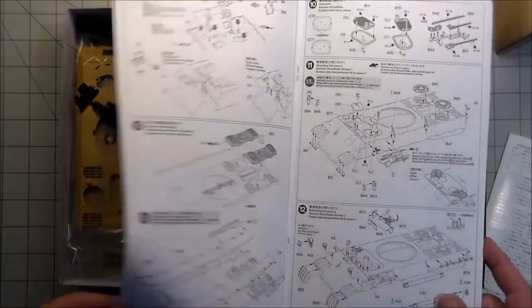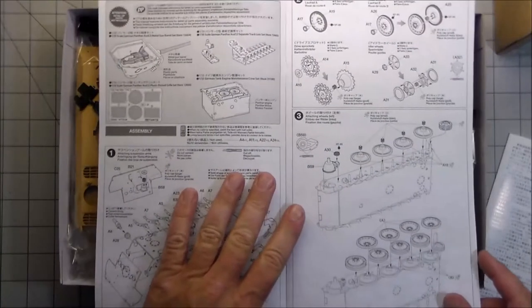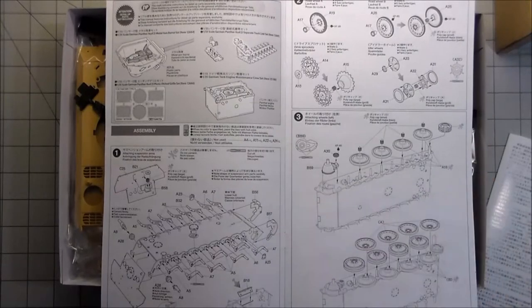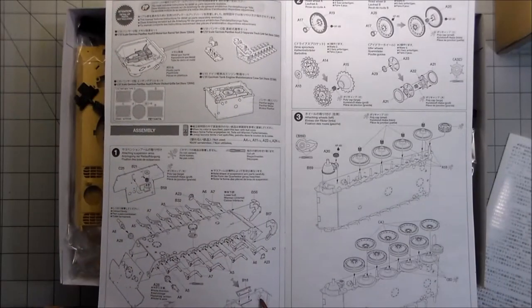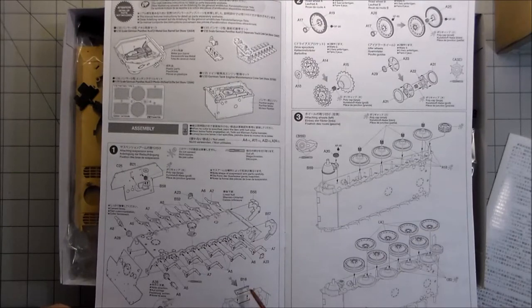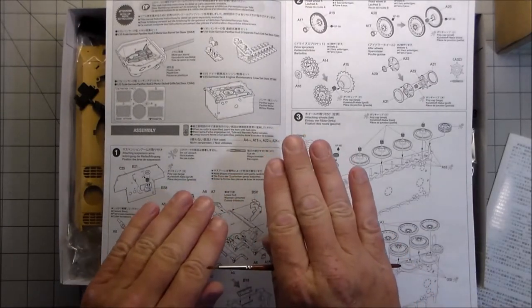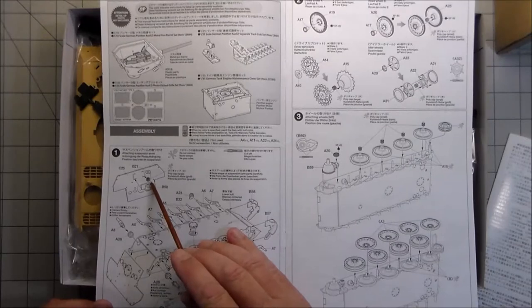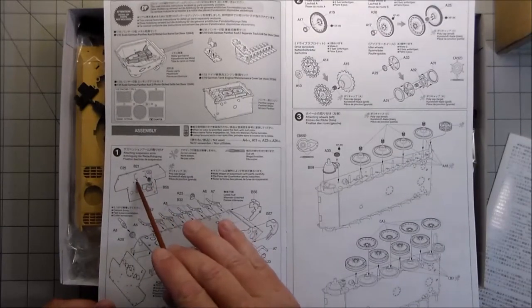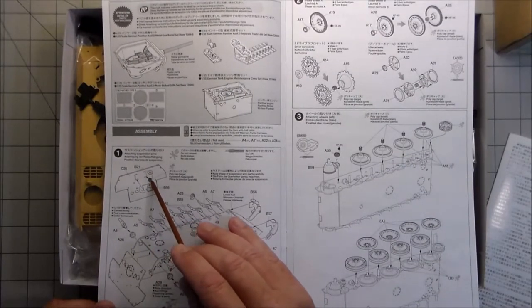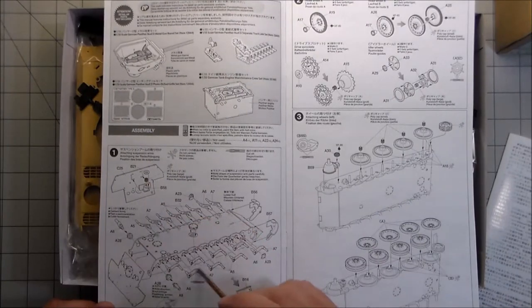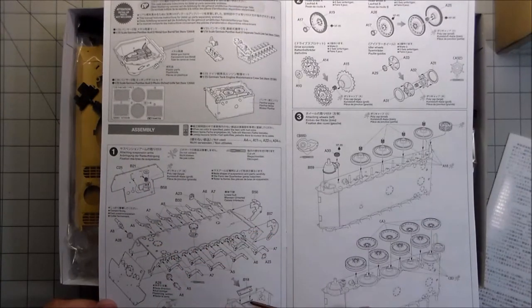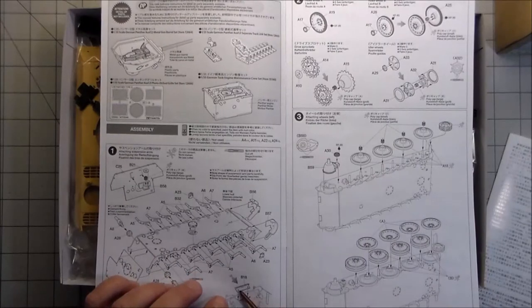One thing that I have noticed just now that I really like about the way Tamiya is doing their kits is the way their upper hulls fit together. I mentioned this on the Sherman - they use a slide-together type system for the upper hull to the lower hull.